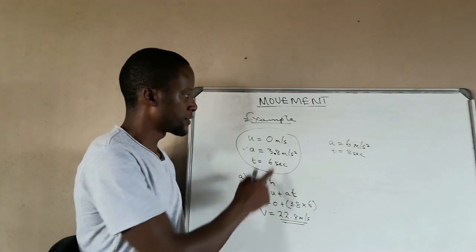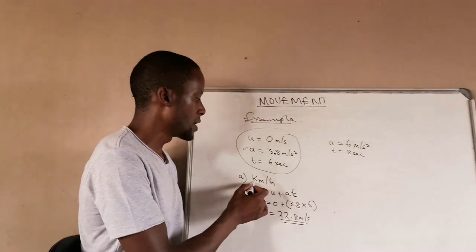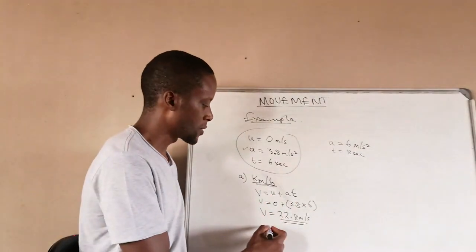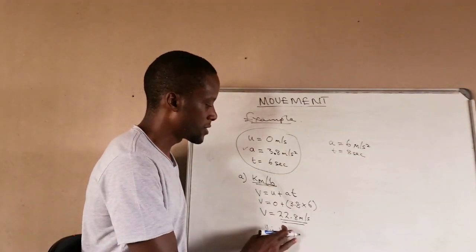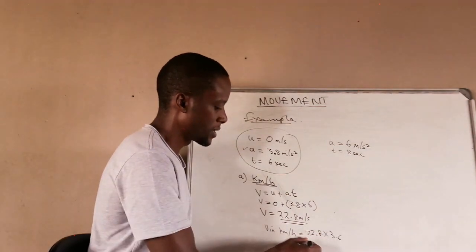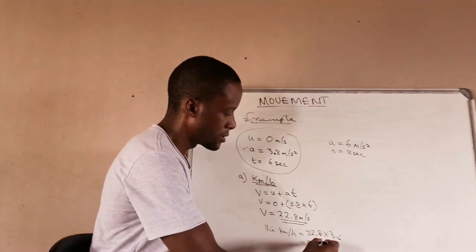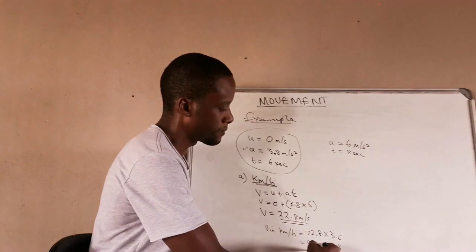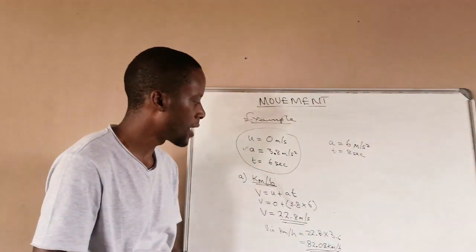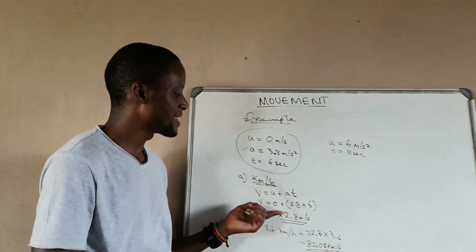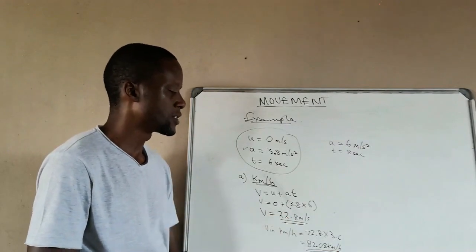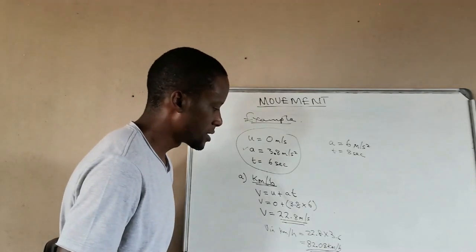Our velocity after six seconds starting from rest is 22.8 meters per second. Now the question asks for the answer in kilometers per hour, so we convert by multiplying by 3.6. Velocity in kilometers per hour equals 22.8 multiplied by 3.6, which gives us 82.08 kilometers per hour. There is no difference between the two values — they represent the same speed, just in different units: one in kilometers per hour and one in meters per second.